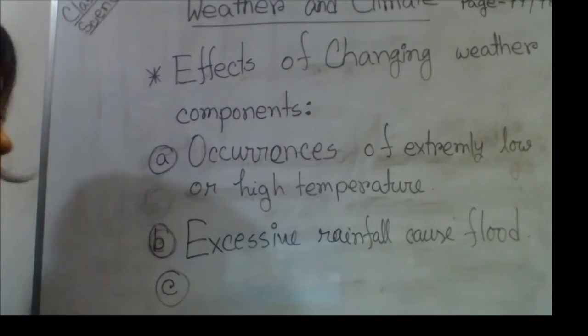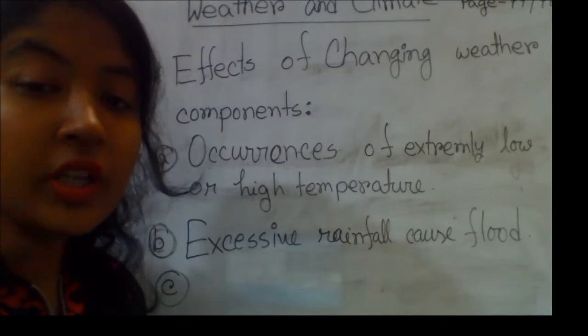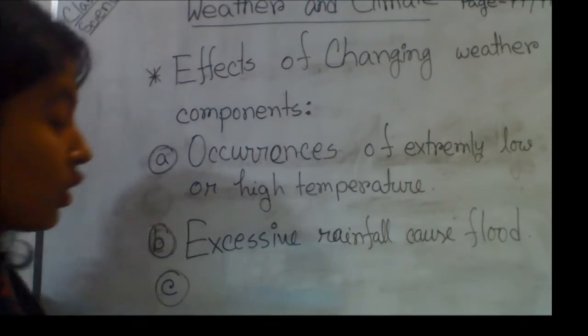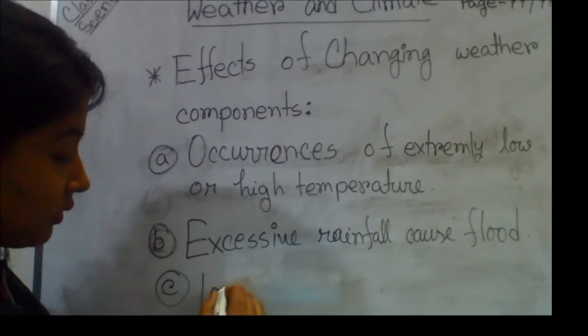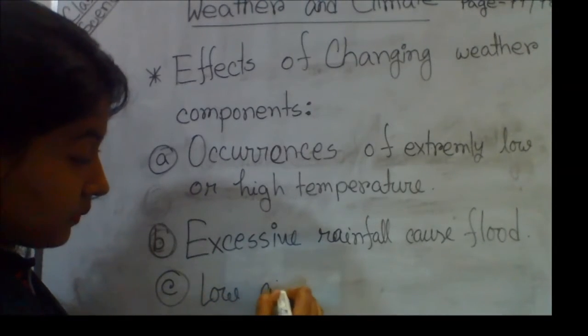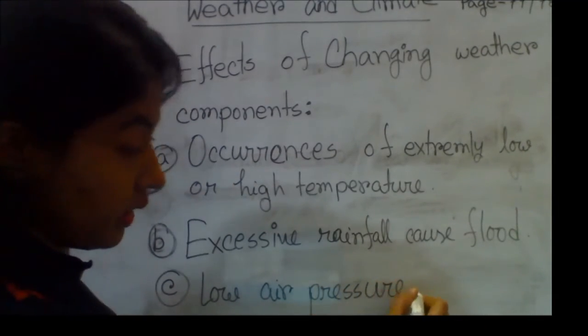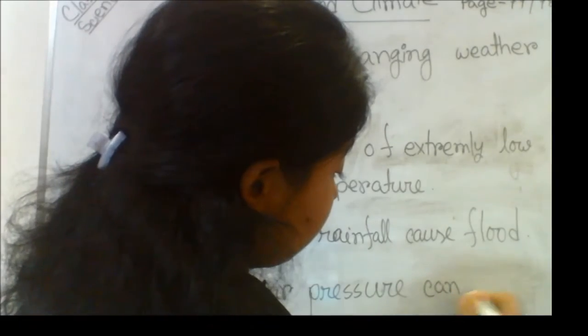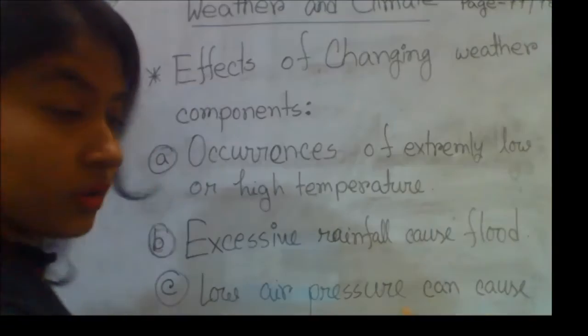Point number C: if low air pressure occurs, then low air pressure may cause cyclone. So point number C will be low air pressure can cause cyclone.